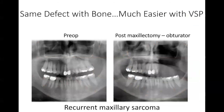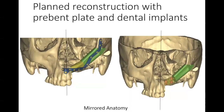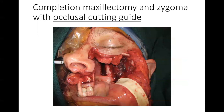Now let's look at a similar defect reconstructed with bone. This woman was already resected and was using an obturator with a recurrent maxillary sarcoma — she never had any reconstruction. We plan the reconstruction by mirroring from the right side onto the left side to determine normal anatomy, then plan a 3D printed plate with two immediate dental implants. Cutting guides freshen the edges at both the zygoma and pre-maxilla levels, and these cutting guides are based on occlusion to improve accuracy with placement of the maxillary cutting guides.